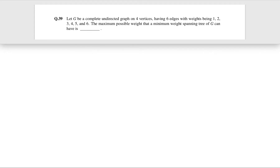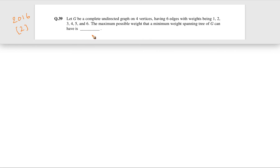This question came in GATE 2016 for two marks. Let G be a complete undirected graph on four vertices having six edges with weights being 1, 2, 3, 4, 5, 6. The maximum possible weight that a minimum weight spanning tree of G can have is what?